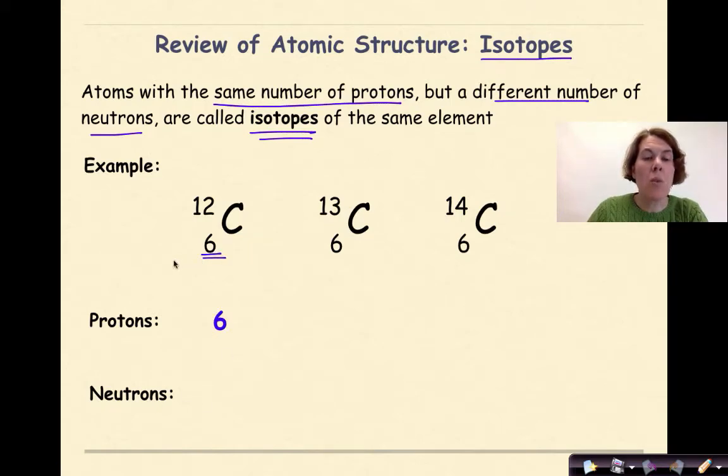But if I look at neutrons, what I need to do here is I need to take my atomic mass and subtract my number of protons. So 12 minus 6 is 6. Therefore, my number of neutrons will be 6.